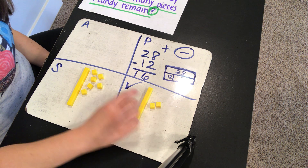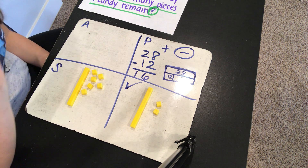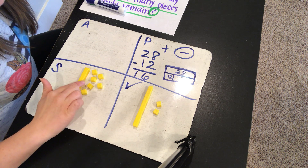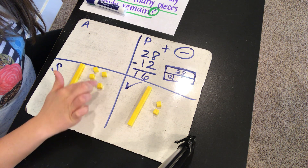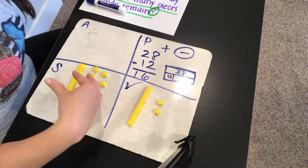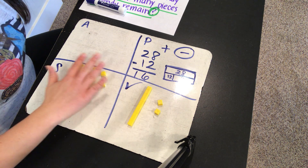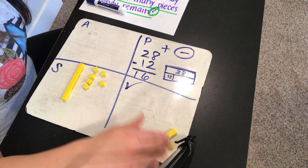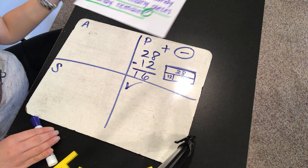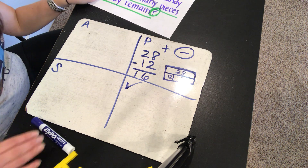I can check this by adding these back together and seeing if I get 28. If I do, I know I had the correct answer of 16. When counting base 10 blocks, it's easier to start by counting the 10s: 10, 20, then 21, 22, 23, 24, 25, 26, 27, 28. I got 28. So I was able to check my work and got the correct number I started with — 16 was my correct answer. I had 28, took away 12, and now I have 16. So how many pieces of candy remain? 16 pieces of candy remain.